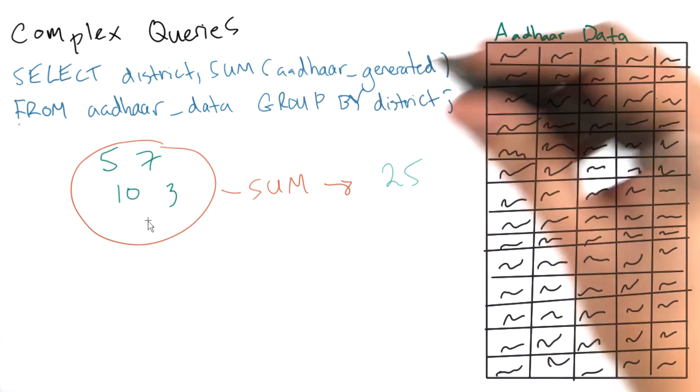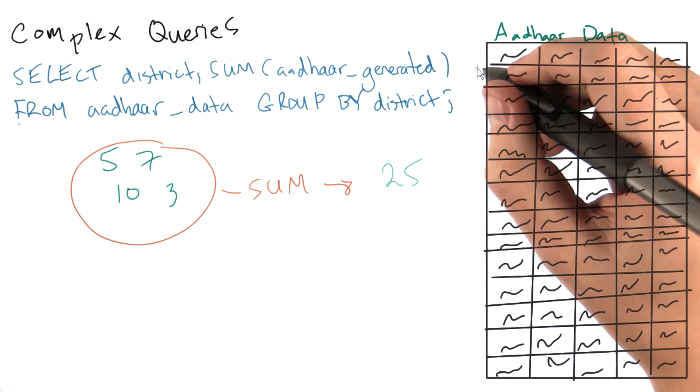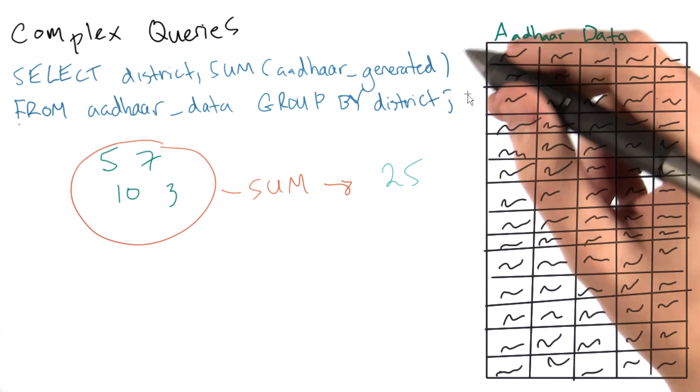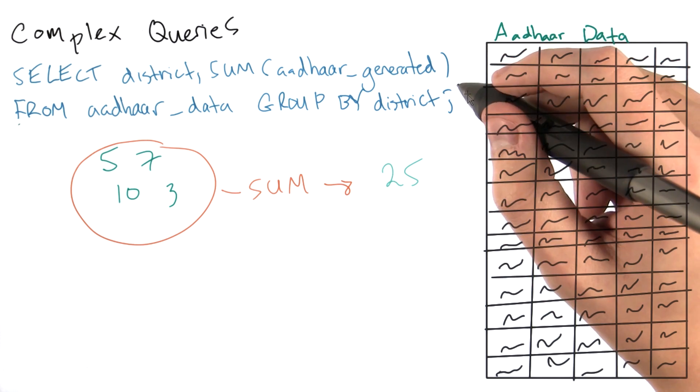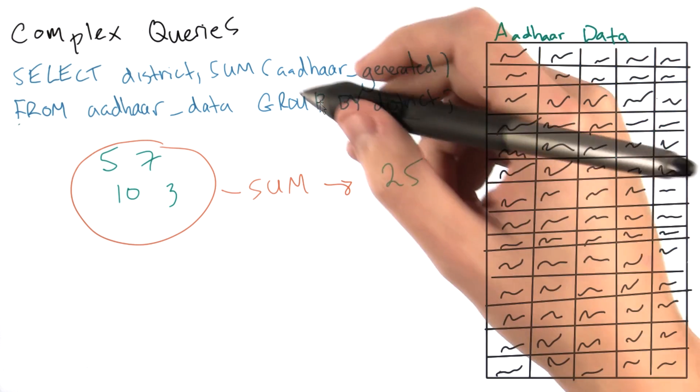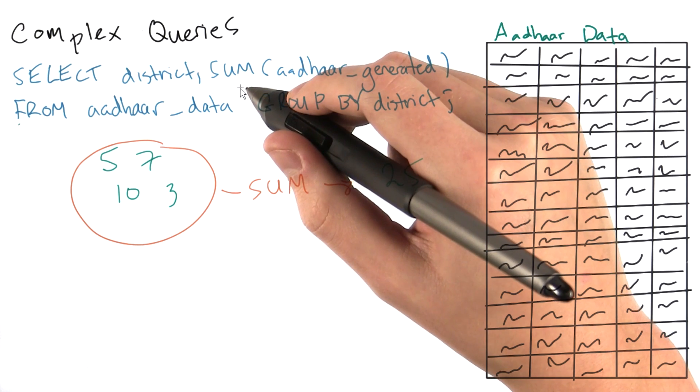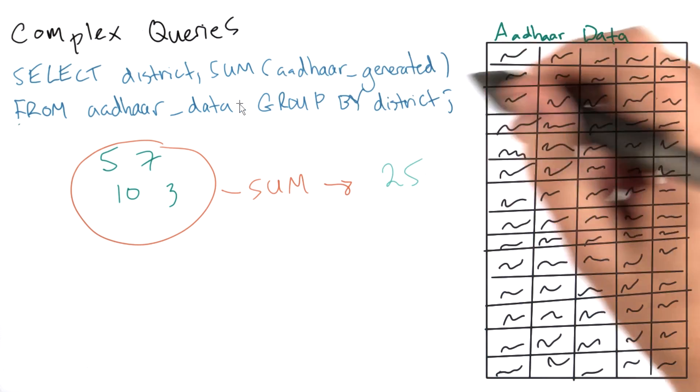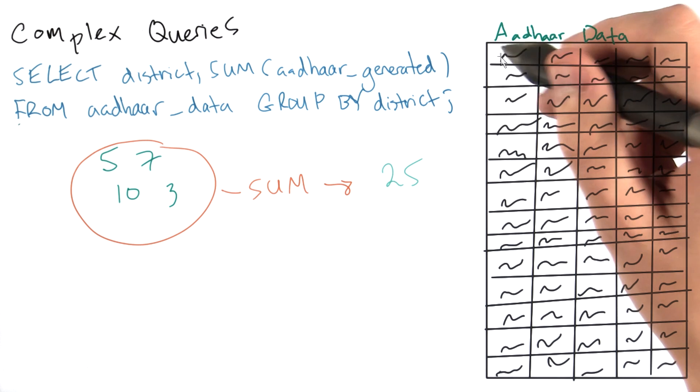But wait. Every single row is only one number. So how do we get to collections of numbers? What we basically say here is take each distinct district, and then for all of the different values of Aadhar generated corresponding to a row for that district, sum them up.